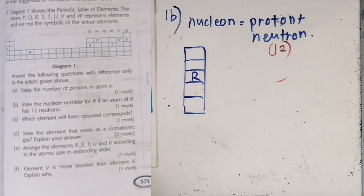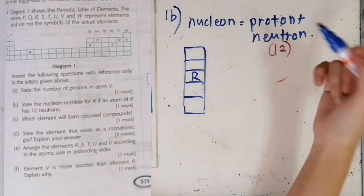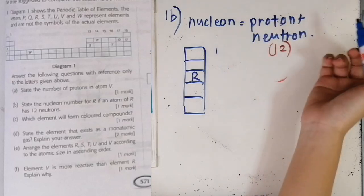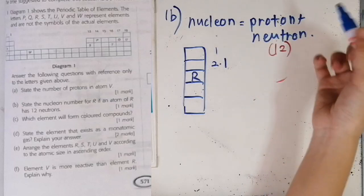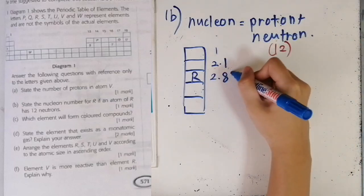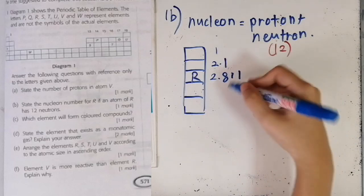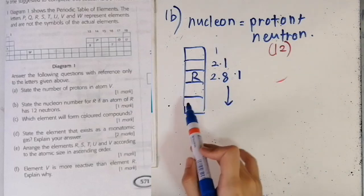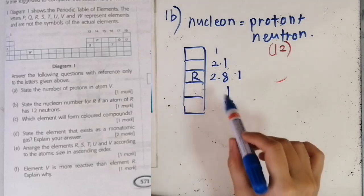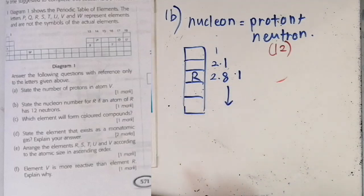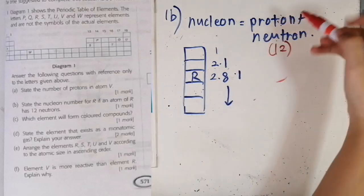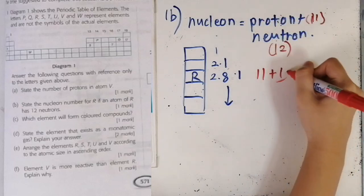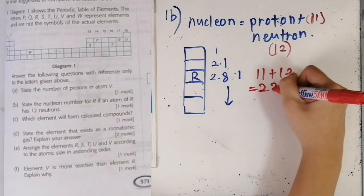Group one elements have only one valence electron. The first element (topmost) is 1, then coming down we have 2,1, then the third element is 2,8,1, and so on, adding 18 each time. To find the proton number for R, you add 2+8+1 to get 11. So the proton number is 11, and to get the nucleon number, take 11+12, giving an answer of 23.